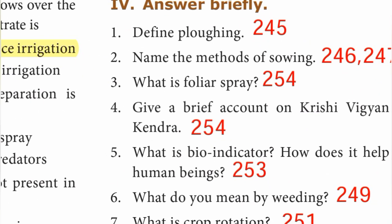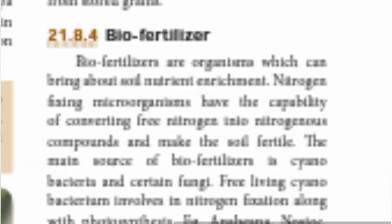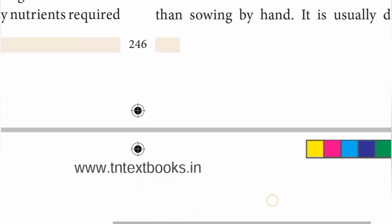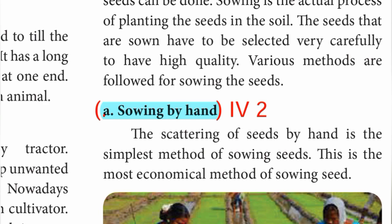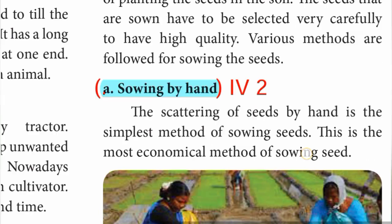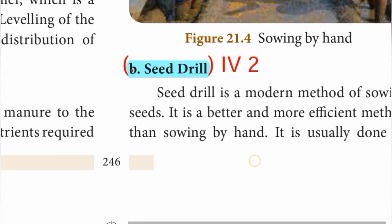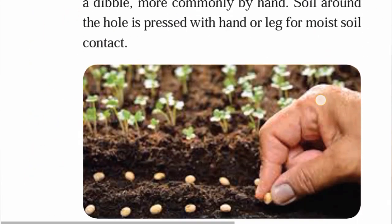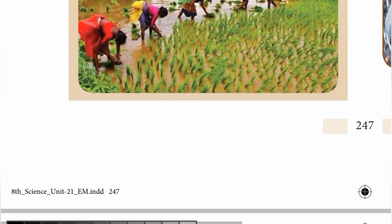Second question: name the methods of sowing, page number 246 and 247. Methods of sowing: A — sowing by hand; B — seed drill; C — dibbling.